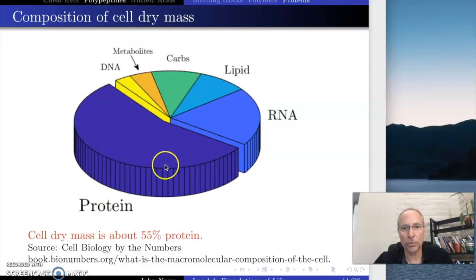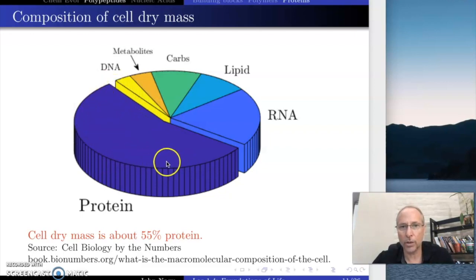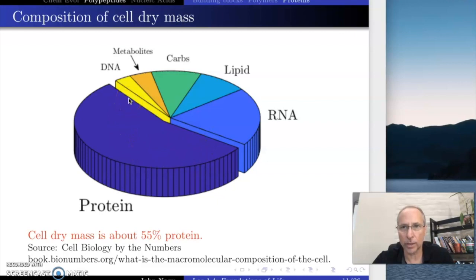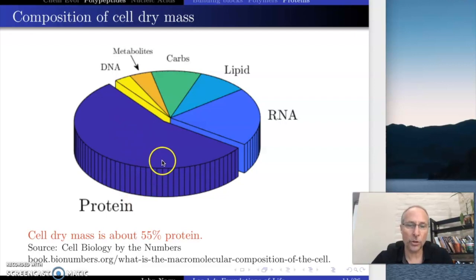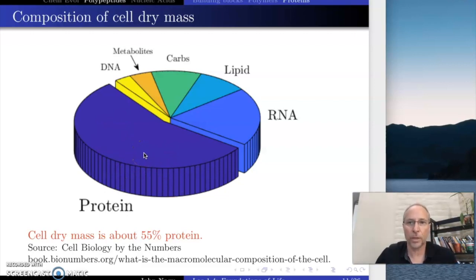This pie chart shows the kinds of molecules in dry mass. This big huge slice — more than half — is protein. So if you get rid of all the water in your body, more than half of the remaining mass is protein. The proteins are doing a lot of stuff. In terms of total dry mass, 55% of the dry mass of your body is protein.